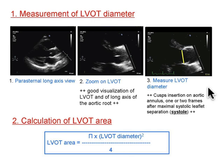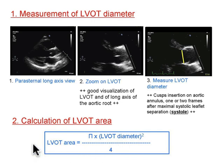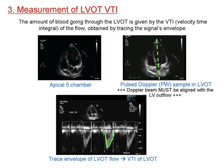That LVOT diameter is an important part of calculating cardiac output. When you lock in that value, the machine immediately squares it, multiplies by pi, and divides by 4 to give you the LVOT area. So it converts the diameter into area. The next thing you're going to do is measure the velocity-time integral across that aortic valve.